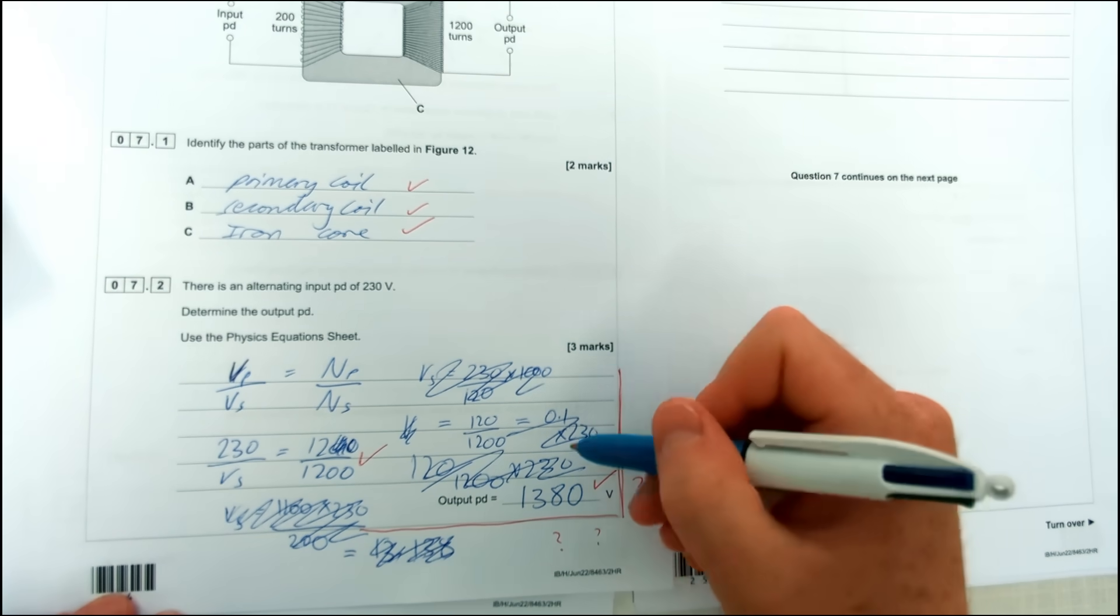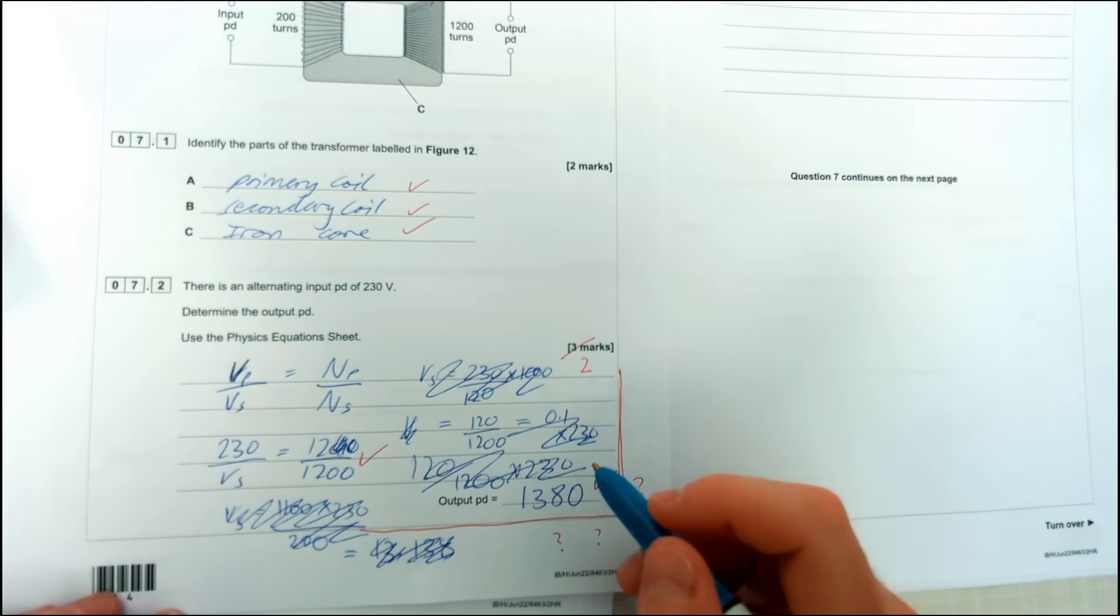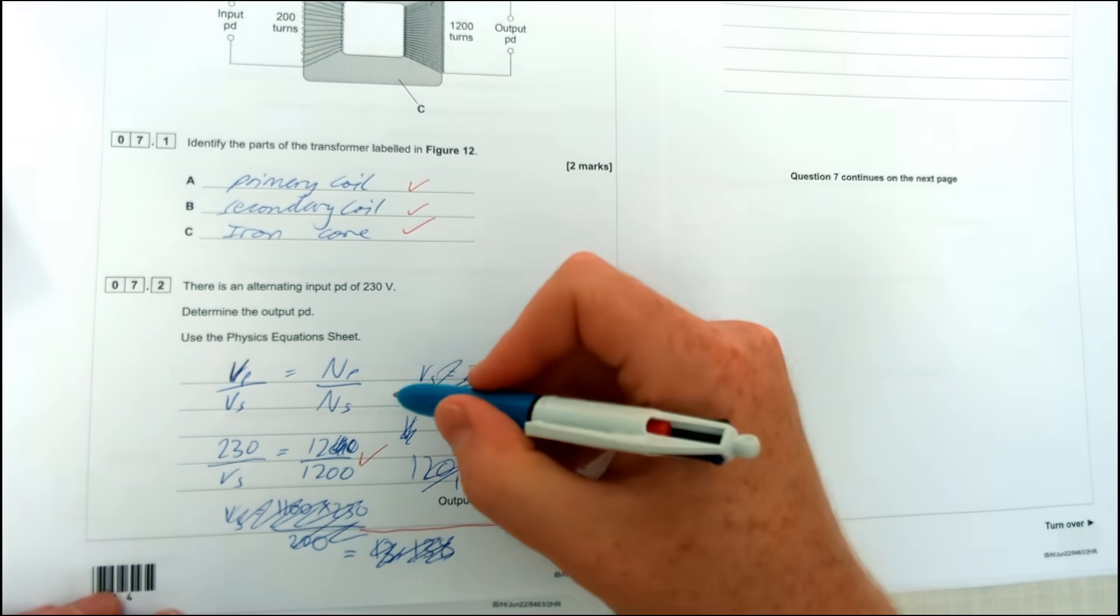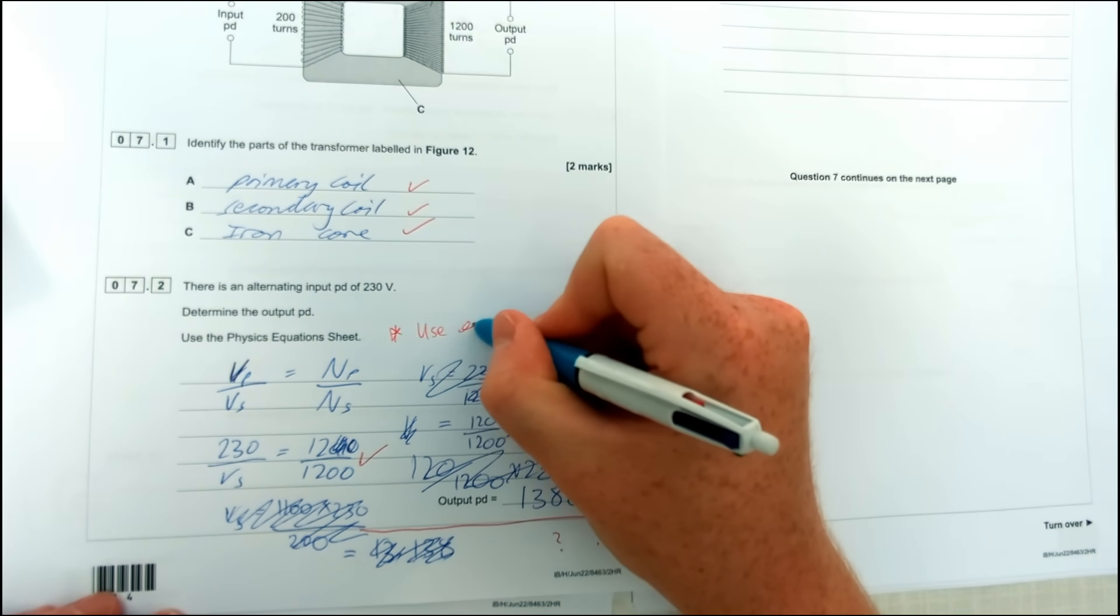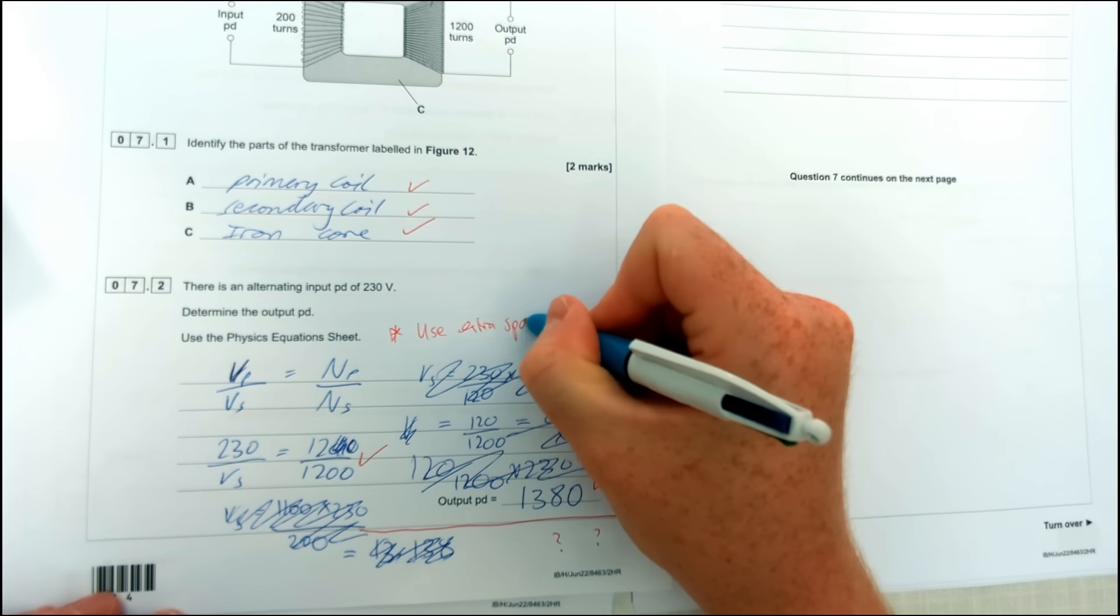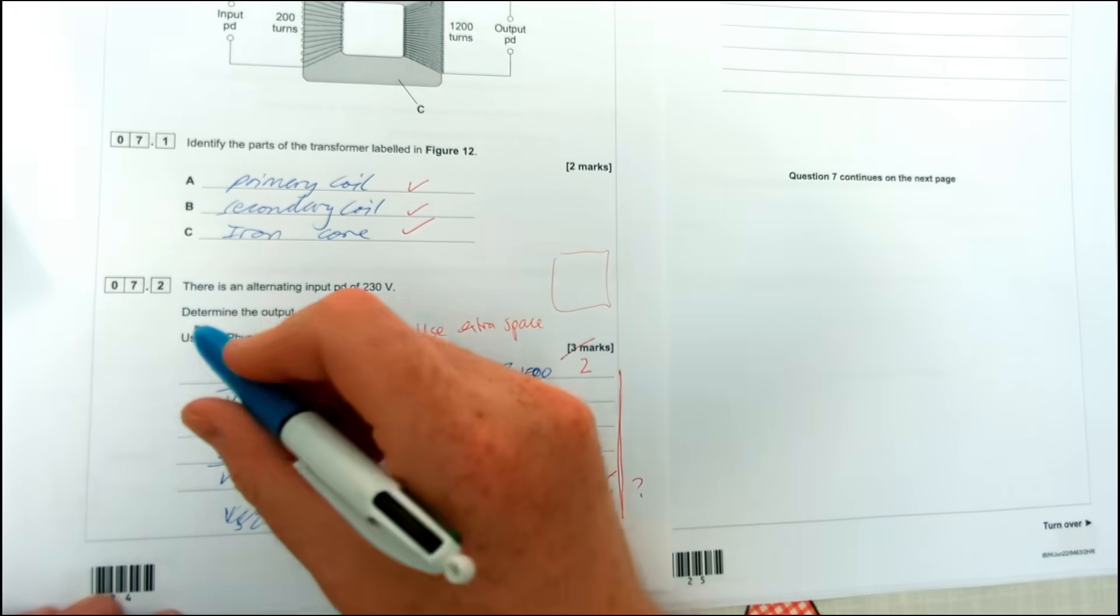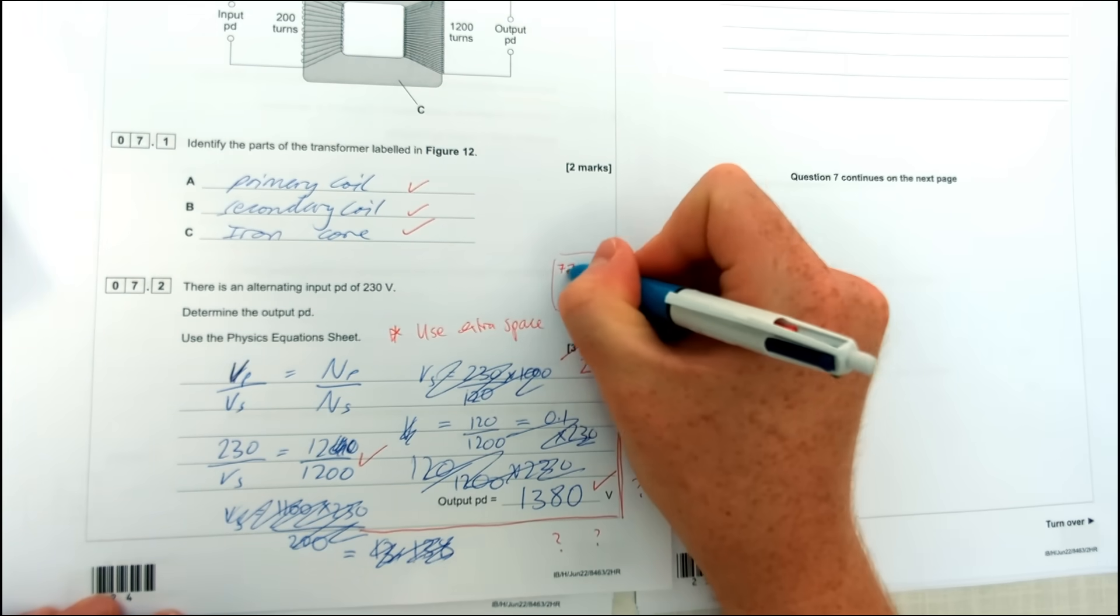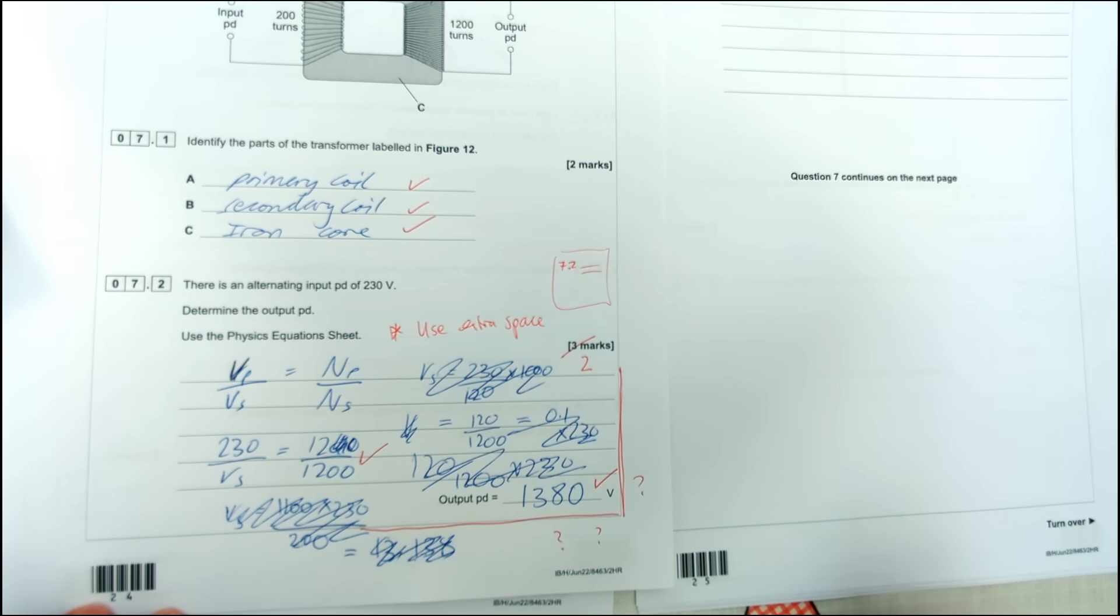So what you should do is in your question, let's say you go to here, write a little star, say use extra space, and then you go to the back and you make sure on the back page you write down the question number, so 7.2, and then you just carry on with your answer there. It will always get marked, I promise you. There's someone looking through to check every paper that's got those sort of answers at the back.